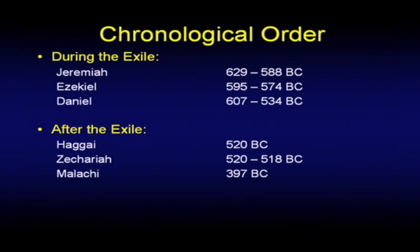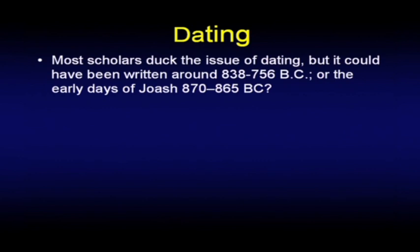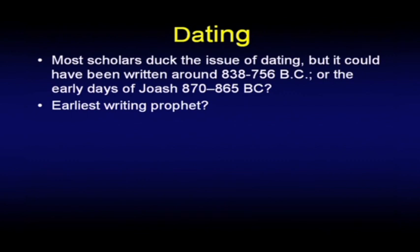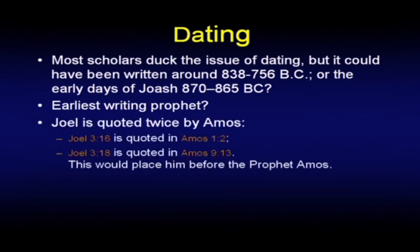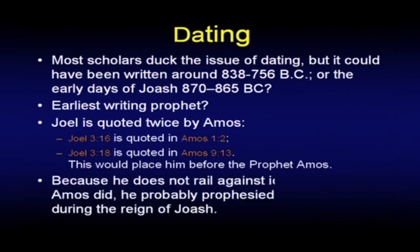After the exile we have the three post-exile prophets: Haggai, Zechariah, Malachi — from the sixth century into the fourth. Now, dating. Most scholars duck the issue of dating, but Joel could be written very early. 838 to 756 is a common estimate, possibly in the early days of King Joash, 870 to 865. It's regarded by many commentators as the earliest writing prophet. Joel is quoted twice by Amos, which would place him prior to Amos.